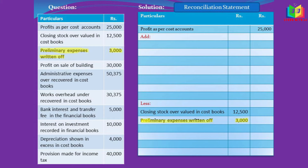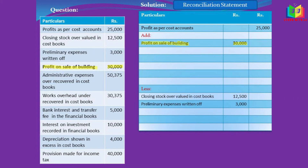The next item is preliminary expenses written off. This expense will come only under the financial book, so in the cost book it is considered as zero — it is understated. If expenses are understated, the profit will increase. In order to rectify that, we have to subtract the preliminary expenses.